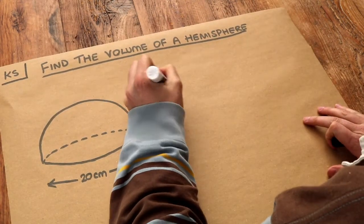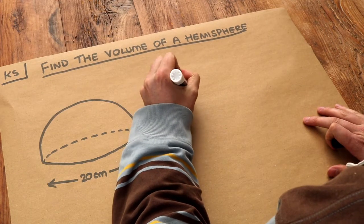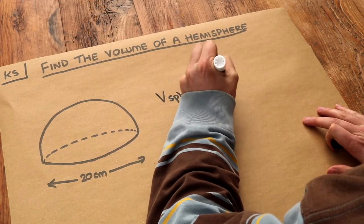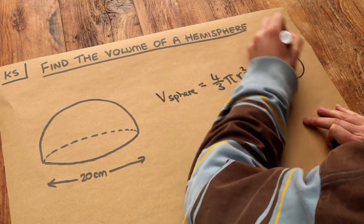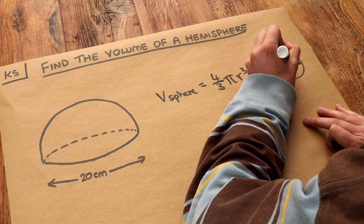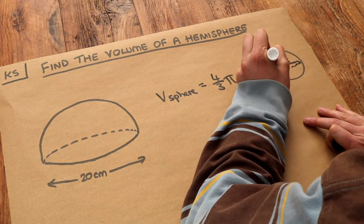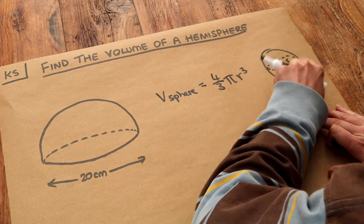Now do you remember what the volume of a sphere was? We explored that in the previous video. It is 4 thirds times pi times r cubed where r is the radius of the sphere. So the distance between the center of the sphere and the surface of the sphere.